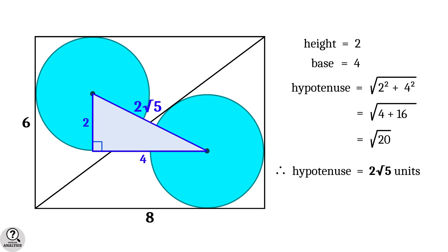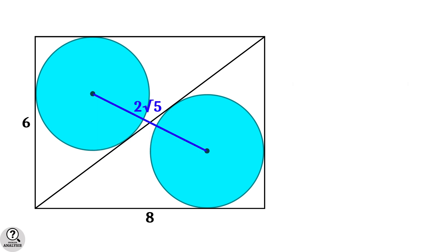This hypotenuse is in fact the blue line in our problem. Therefore, the length of the blue line is 2√5 units, approximately 4.472 units. That is the solution we are looking for.